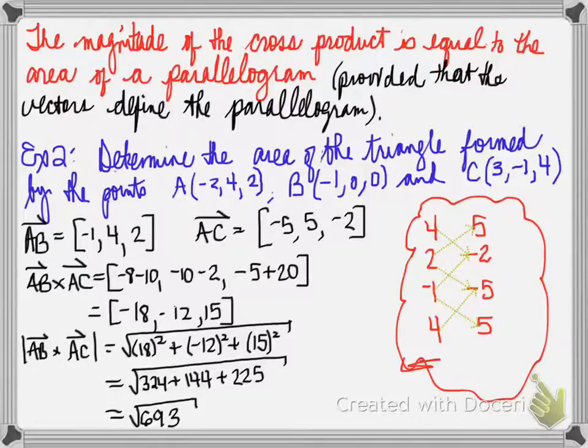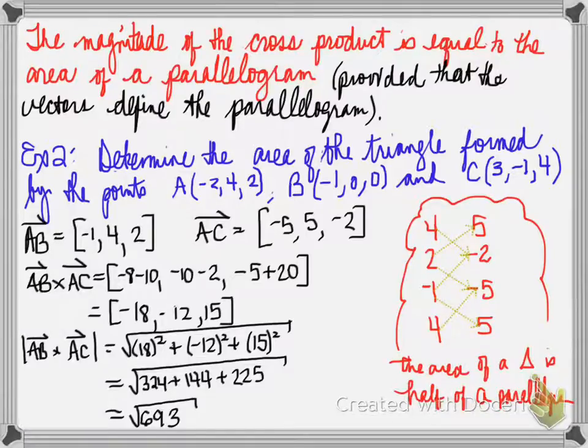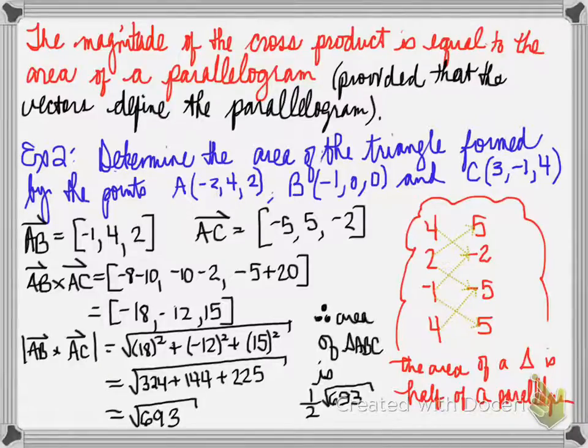We need to find the area of the triangle. So to find the area of the triangle, it is half of a parallelogram. So taking this root six ninety-three and taking half of it will result in the area of the triangle. Next question.